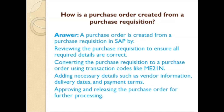How is a purchase order created from a purchase requisition? A purchase order is created from a purchase requisition in SAP by reviewing the purchase requisition to ensure all required details are correct, converting the purchase requisition to a purchase order using transaction codes like ME21N, and adding necessary details such as vendor information, delivery dates, and payment terms.